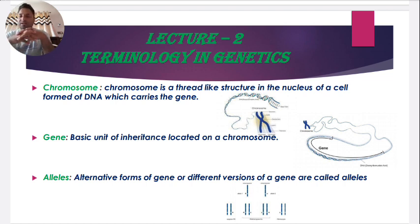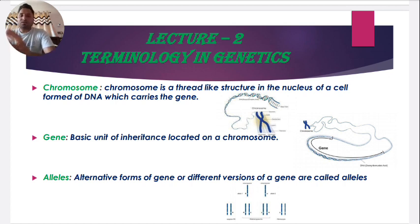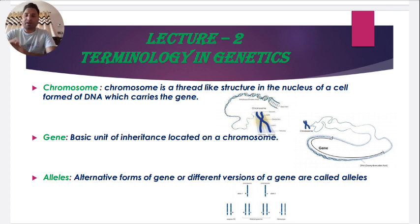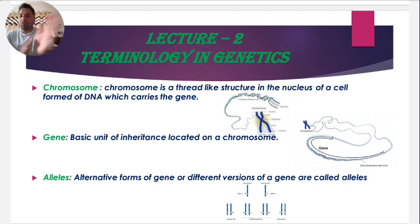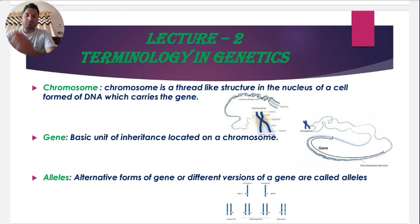The next term is allele. Simply put, an allele is the alternative form of a gene — different versions of a gene are called alleles. For example, consider a married couple where the male parent is tall and the female parent is dwarf. The character here is height — tallness and dwarfness. When a baby is born, the offspring will carry genetic information from both parents.